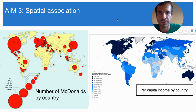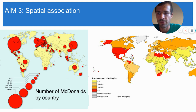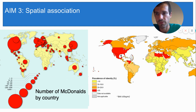Now let's look at low spatial association. If two variables have low spatial association, then they are not found in the same places. Let's compare our map of McDonald's locations to this map of obesity. Is it possible that McDonald's and obesity are correlated? I'm going to make another hypothesis: countries that have lots of McDonald's are also countries with lots of obesity, because eating McDonald's can make people obese. Let's test out my hypothesis by comparing the two maps. In this map, the darker the red, the higher the percentage of the population that's obese.